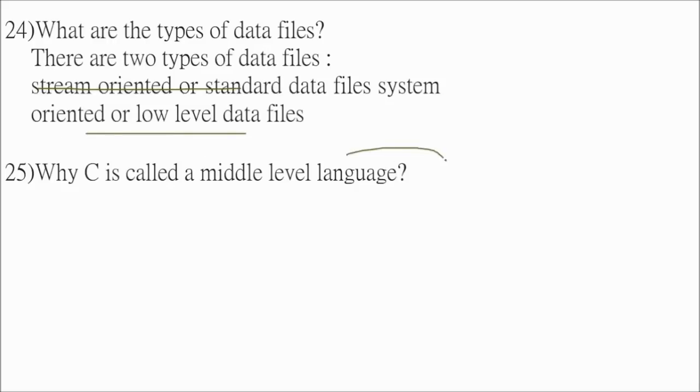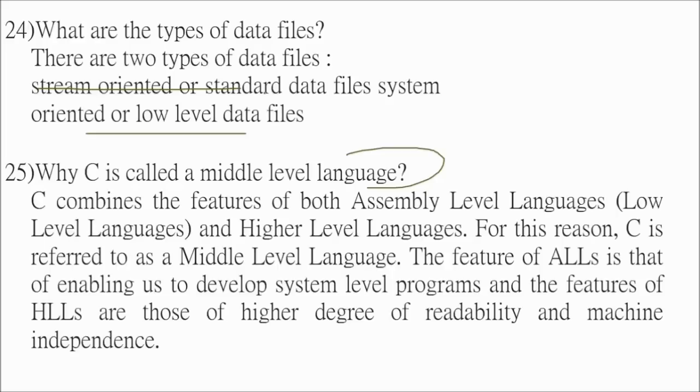So why C is called a middle level language. Because C combines the feature of both assembly language, low level language and higher level language. That is why it is a middle level language. For this reason C is referred to as middle level language. So the feature of the assembly language is that of enabling us to develop system level programs. And the features of high level language are those of high degree of readability and machine independence and English like structure.